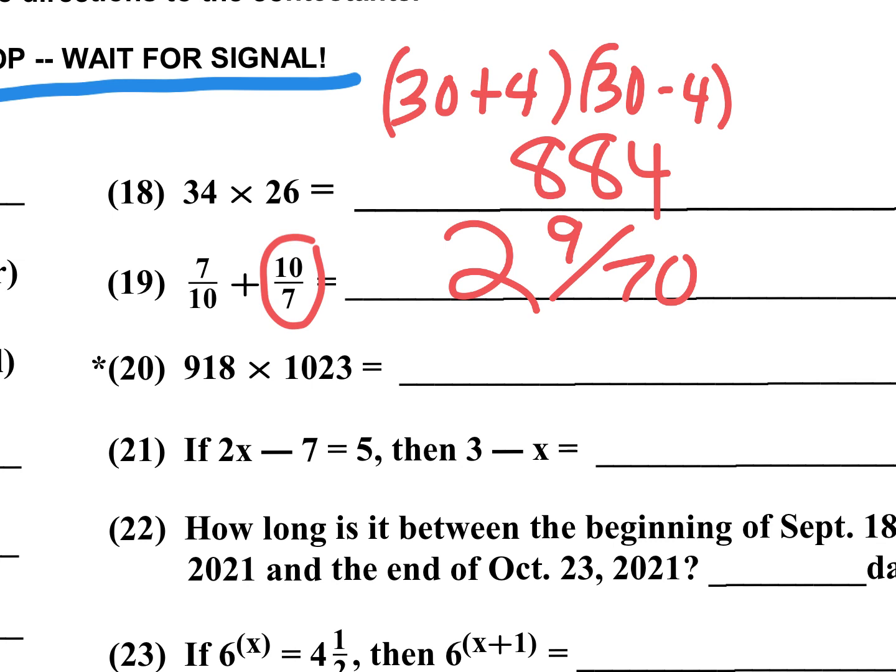Number 20 is a star problem. It is an approximation. 918 times 1,023. What I'm going to do is I'm going to subtract 20 here to make that 1,000, and I'll add 20 here. That's 938. I'll make it 940. 940 times 1,000. 940,000. And that is number 20.